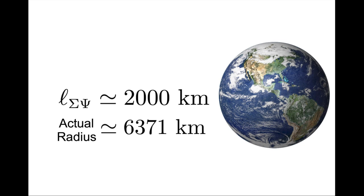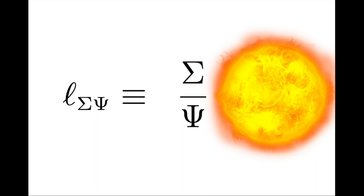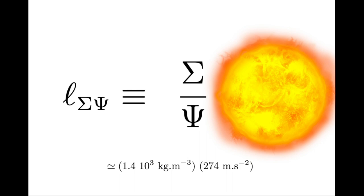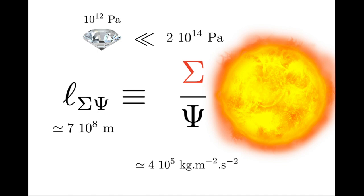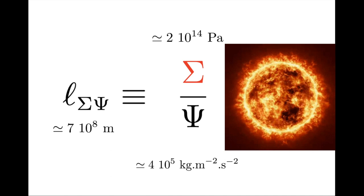Now think of the sun. The surface gravity is around 274 m/s² — almost 30 times that of earth — and the density is around 1.4 tons per cubic meter. The radius of the sun is around 7×10⁸ meters. If the sun's size is due to the balance between stress sigma and force density psi, the formula implies a stress around 2×10¹⁴ Pascals — 200 times larger than the modulus of diamond — due to the intense nuclear reactions occurring in the sun.